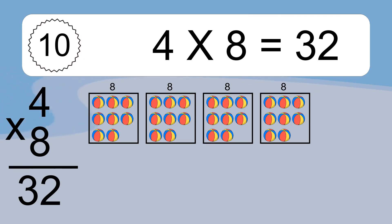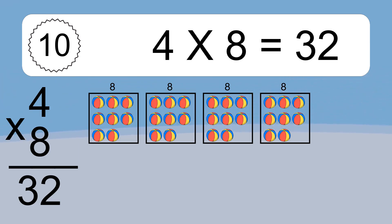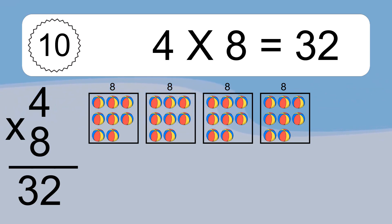4 times 8 equals 32. We have boxes and each box has colorful balls inside. If you count all the balls in all the boxes together, you will have 4 times 8 balls. This equals 32 balls.